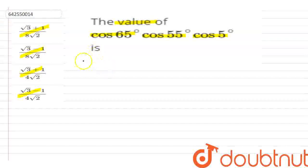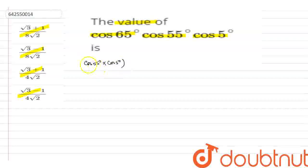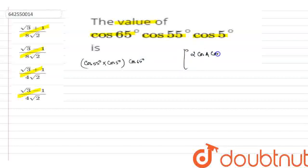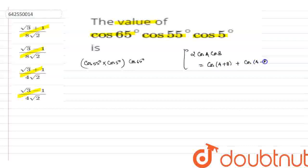We can solve this question by rewriting it as cos(55°) × cos(5°) × cos(65°). We can use the formula: 2·cos(A)·cos(B) = cos(A+B) + cos(A−B).